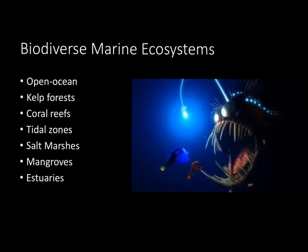This brings us into biodiverse marine ecosystems. There are many different types of ecosystems within the oceans, so let's run through a couple of the main ones. Starting with the open ocean — it is full of life, and famously home to creepy dark-dwelling animals such as the anglerfish featured in Finding Nemo.